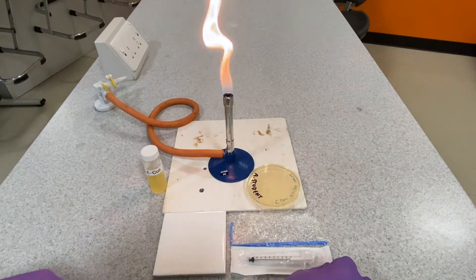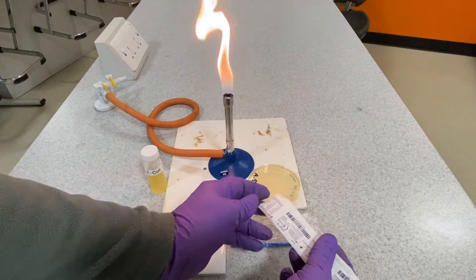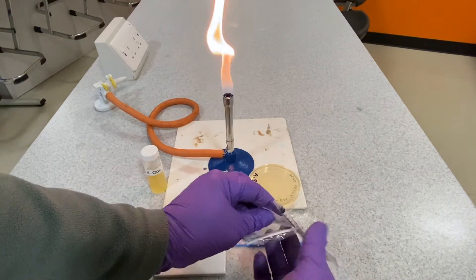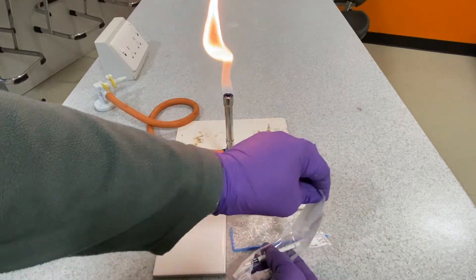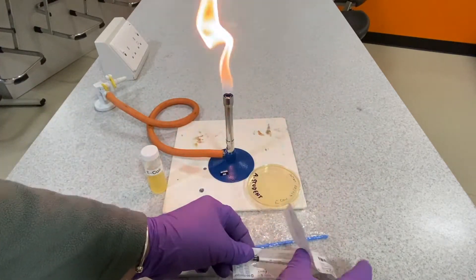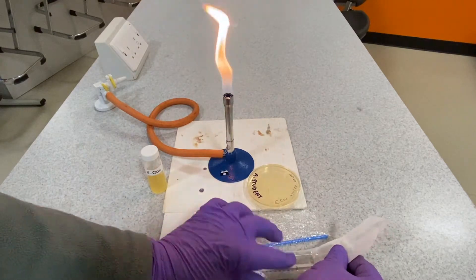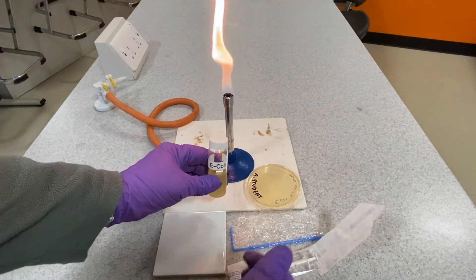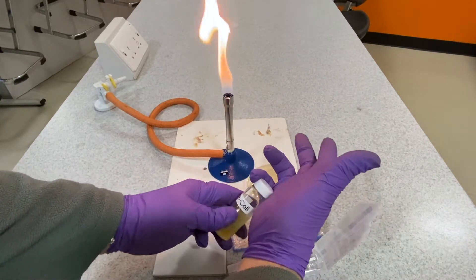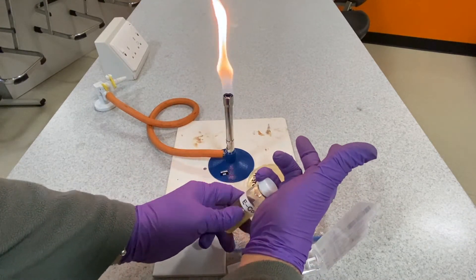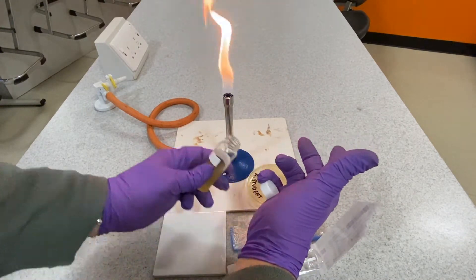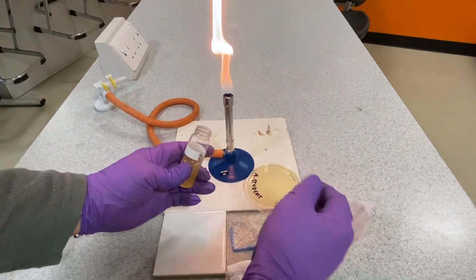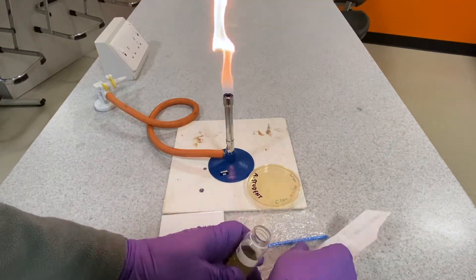Making a lawn plate. Using the 1ml syringe, open the packet and leave the syringe within the plastic wrapper. Open the bacterial sample using the method with the little finger of the right hand retaining the lid. Flame the neck of the bottle.